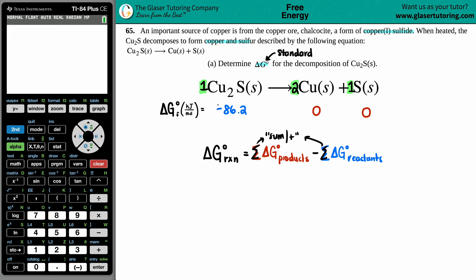So I just multiply those numbers by the values that I found in the back of the book: one times this, two times zero, one times zero. You would add up the product side, but zero and zero is just zero. And one times -86.2 is -86.2.